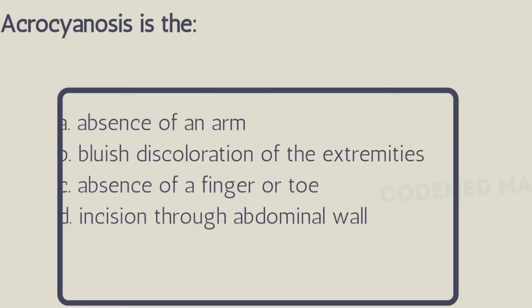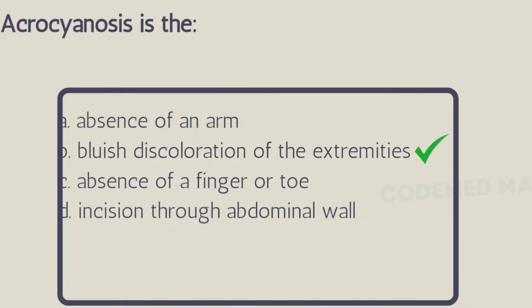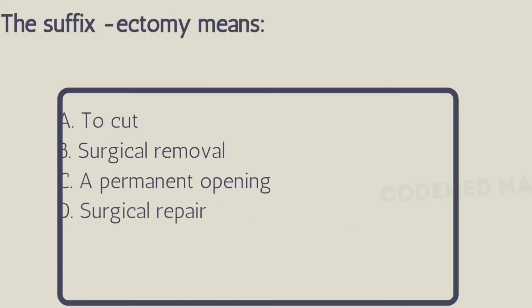Next question: acrocyanosis is — Option A: absence of an arm, Option B: bluish discoloration of the extremities, Option C: absence of a finger or toe, Option D: incision through the abdominal wall. The right answer is Option B, bluish discoloration of extremities. 'Acro' means extremities of the body, and 'cyanosis' is bluish discoloration.